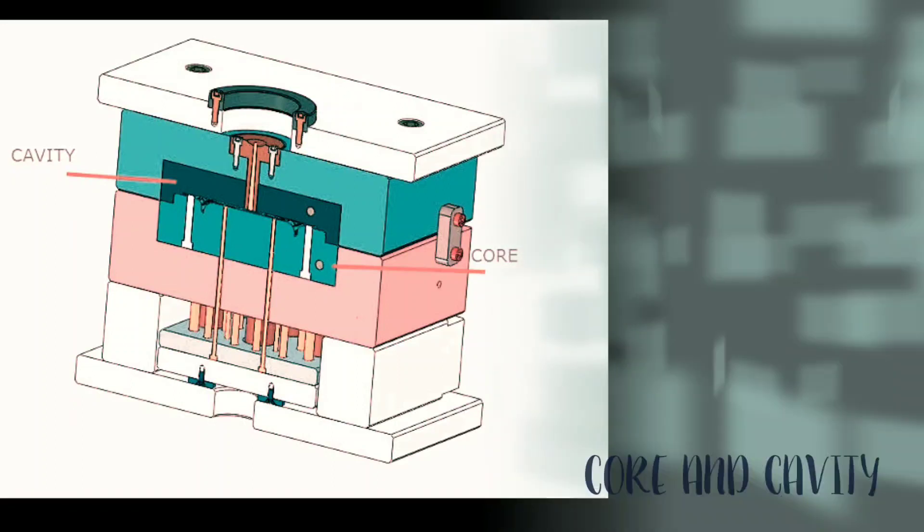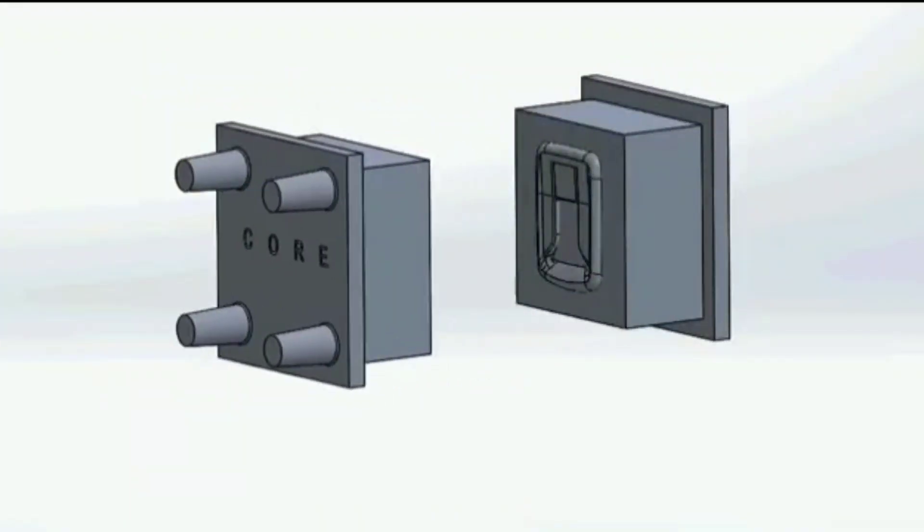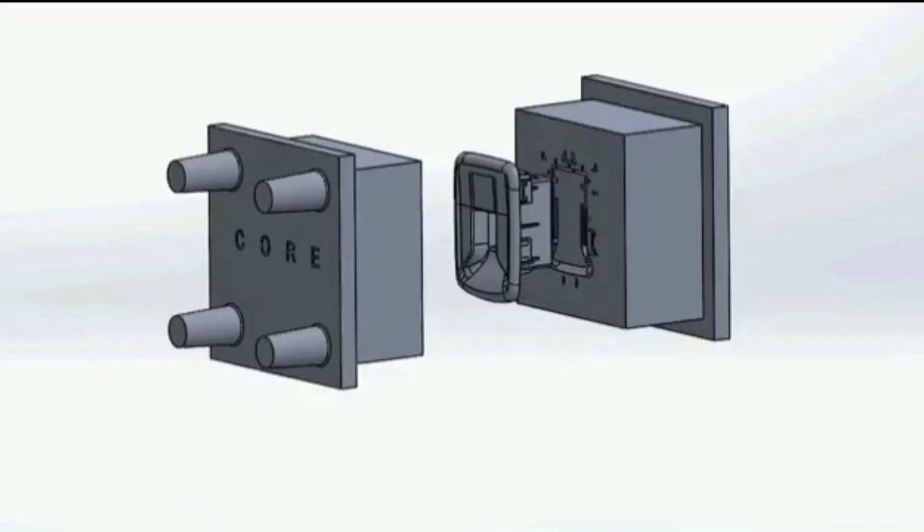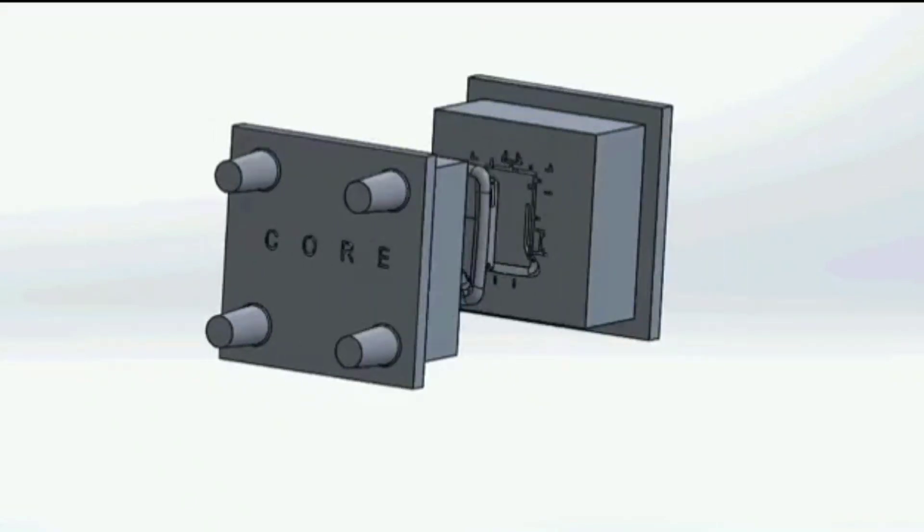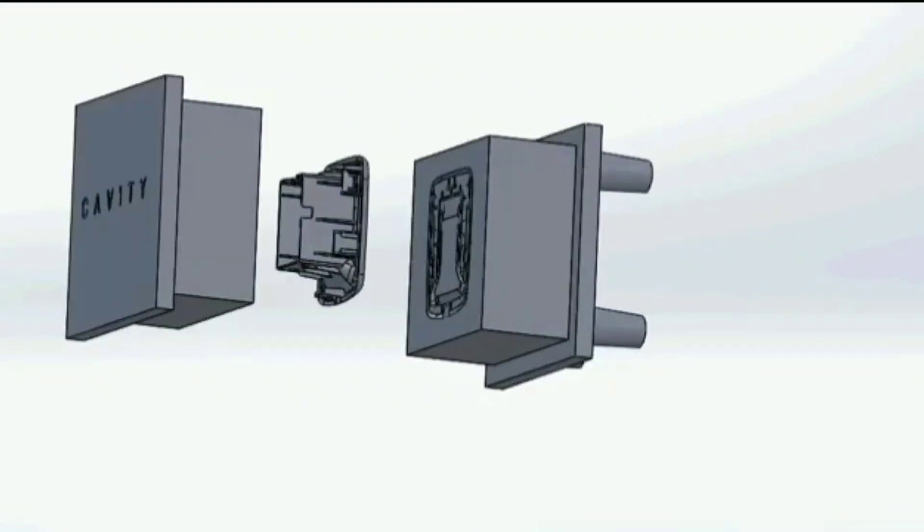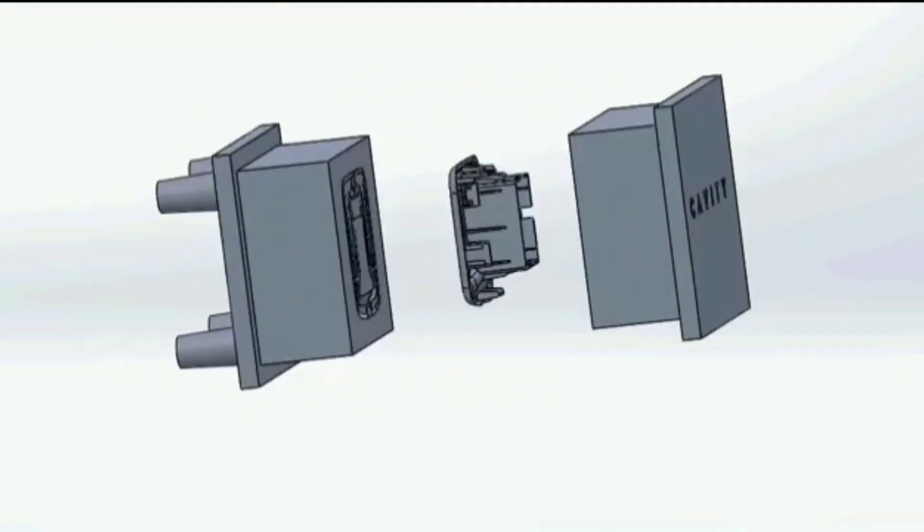Core and cavity work: As you can see on the screen, the mold is open and the product is coming out. The cavity is coming out, and on the opposite side is our core. This demonstrates how the core and cavity work together. This is our core and cavity.